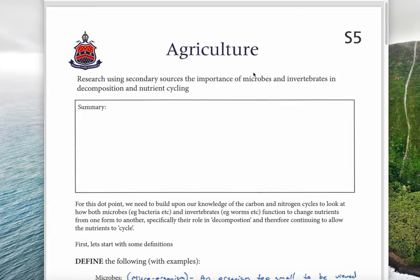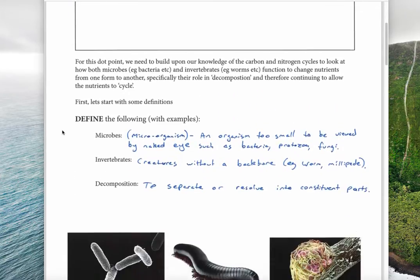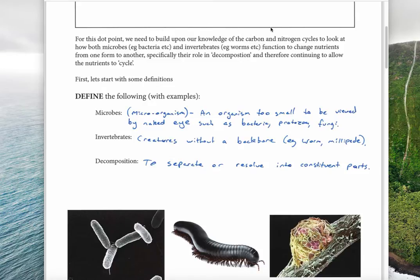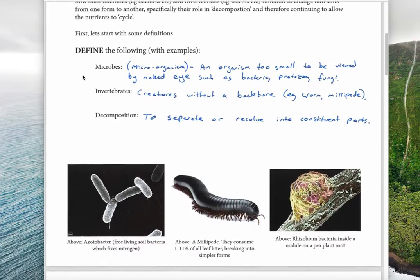We're looking at how microbes, meaning bacteria and fungi, and also invertebrates such as worms and millipedes, help break down organic matter and help cycle nutrients like carbon and nitrogen around the atmosphere and the soil. We need to continue building on our knowledge of the carbon and nitrogen cycles to look at bacteria and worms and how they change them.